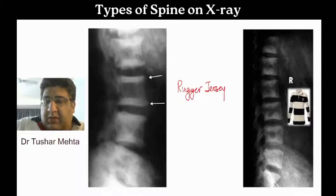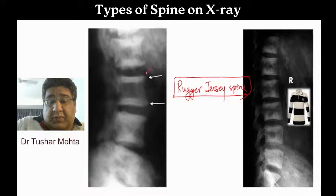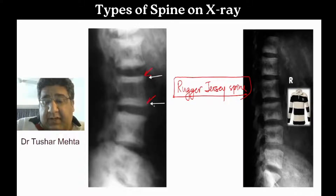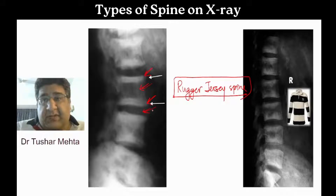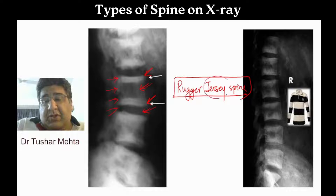This is what is called rugger jersey spine, where you can see that the superior end plate is dense and sclerotic, the inferior end plate is dense and sclerotic, the body is black, and the disc space is also black. So you see alternating stripes of white, black, white, black — just like the jersey of a rugby player.